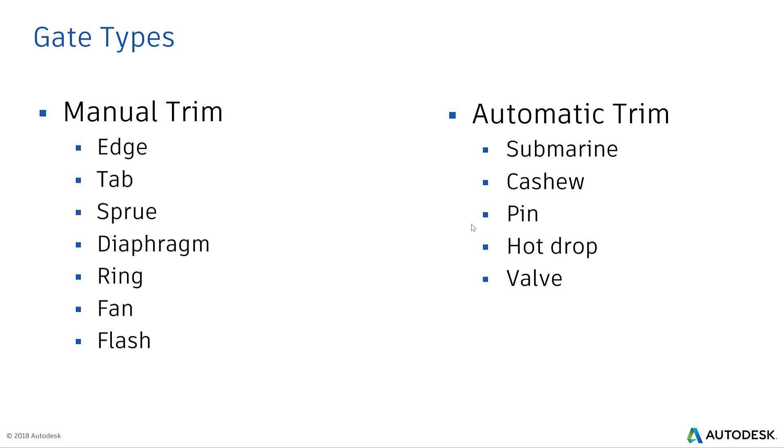These include submarine gate, cashew gate, pin gates, hot drops, or could be a valve gate as well. Typically the size of these gates starts anything between 25% to 75% of the wall thickness.